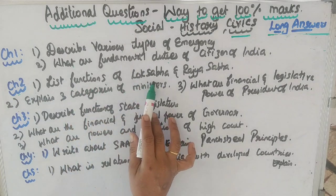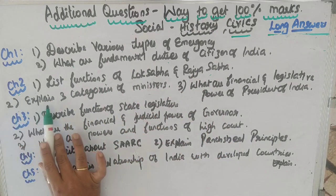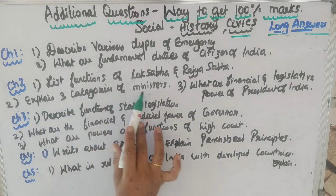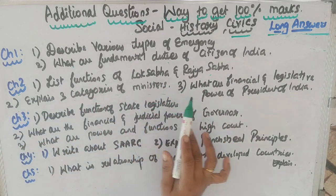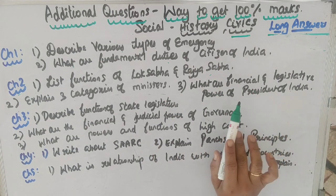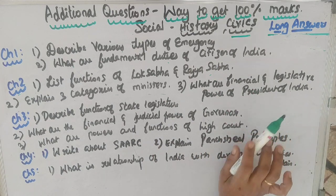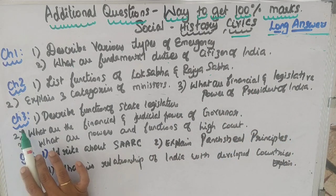Chapter 2: list the functions of Lok Sabha and Rajya Sabha. Second question: explain the three categories of ministers. Third: what are the financial and legislative powers of the President of India?